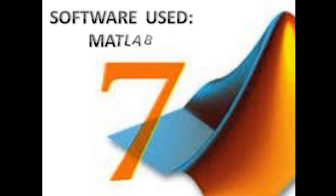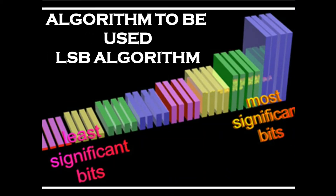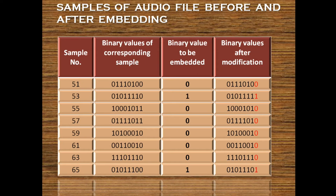The software used for this project is MATLAB, and the algorithm used is the LSB, that is the least significant bit algorithm. Here you can see samples of the audio file before and after embedding. The first column shows the sample number, which begins from 51 because for a WAV audio format, samples 1 to 50 are the header and we are not touching the header. We have taken alternate samples: 51, 53, 55, and so on.